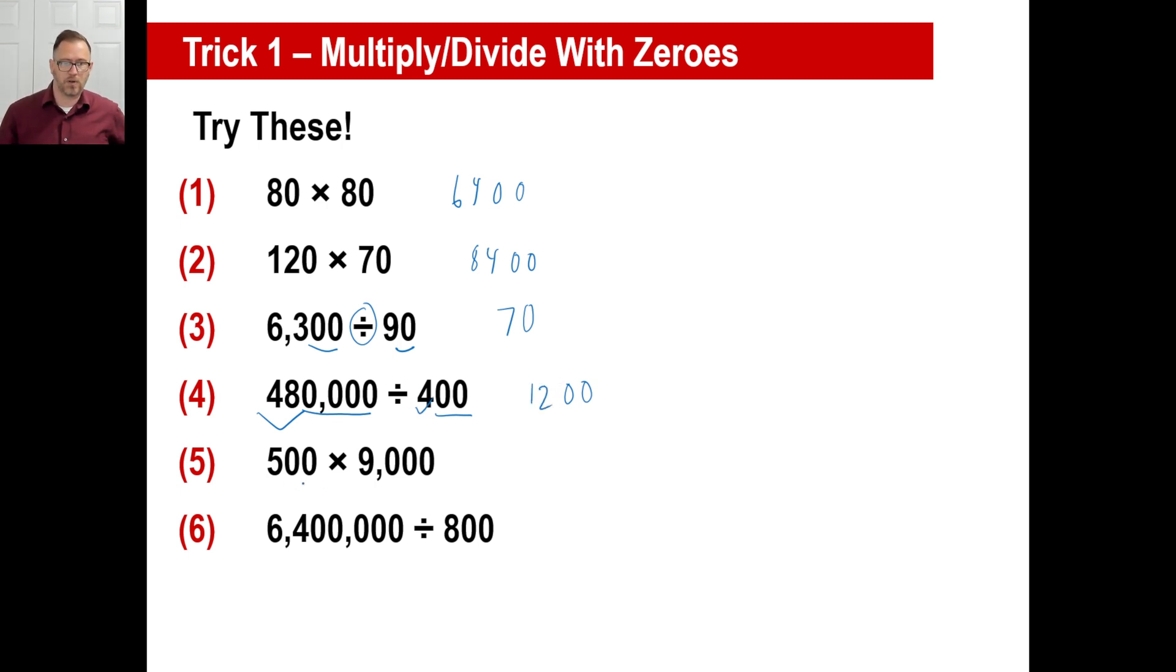Same thing here. We have four zeros minus two zeros. That'll be two zeros. 48 divided by four is 12. Last two. We're multiplying, so we have a total of how many zeros? Five zeros. So one, two, three, four, five. And then five times nine is 45. And that is a big number. Last one. How many zeros are we going to end up with? You tell me. Three, right? Five minus two. So that'll be three zeros. Sixty-four divided by eight. Here we go. That's it.